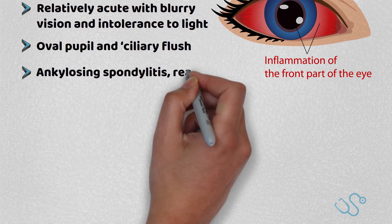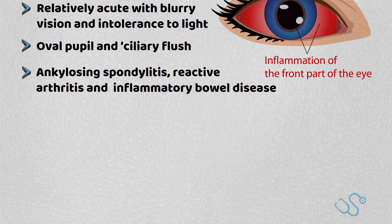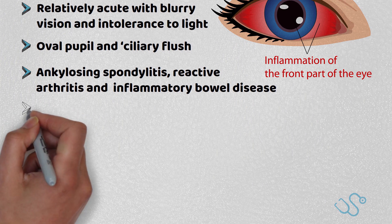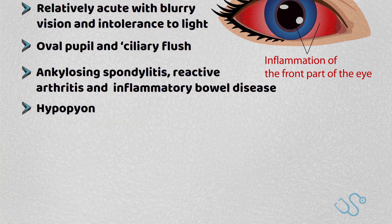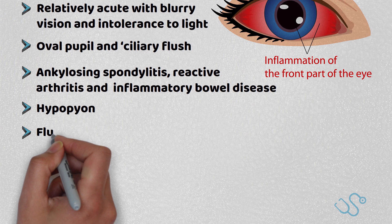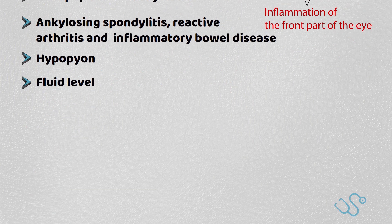Anterior uveitis is classically related to ankylosing spondylitis, reactive arthritis, and even inflammatory bowel disease. There is sometimes a hypopion, which is essentially pus in the anterior chamber of the eye, and thus a fluid level is sometimes seen. This will need an urgent eye review.